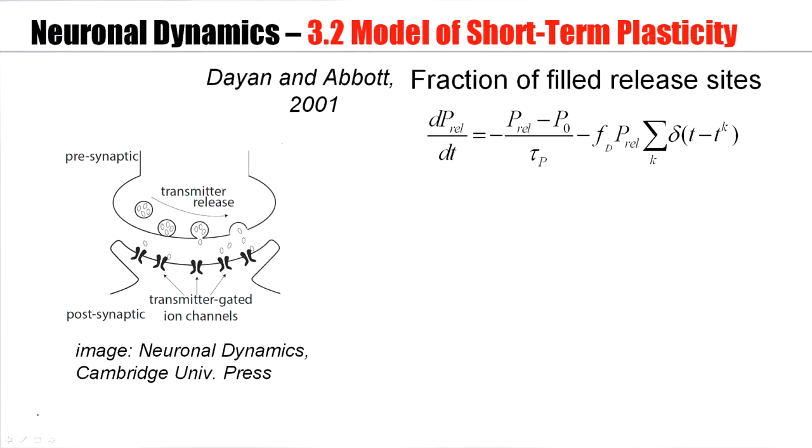So how could we model the observed effects of synaptic depression? As we have seen in part one of this week, inside the presynaptic terminals there are vesicles filled with neurotransmitter. Not all vesicles are in the state ready to use, in the state where they are already close to the membrane so that they can open upon the arrival of the signal and spill out the neurotransmitter. So amongst the total number of vesicles that are around, some see just inside the cell, useless, and a certain fraction is ready to use.